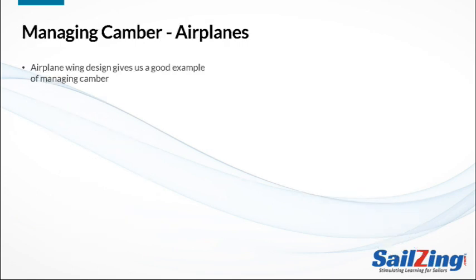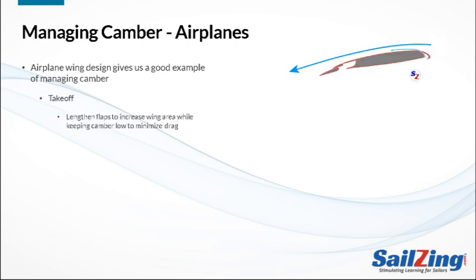Even though there are a lot of differences between airplanes and sailboats, it's helpful to realize that airplanes couldn't fly very efficiently without being able to manage the camber in their wings. Takeoff, cruising, and landing each need different wing shapes. For takeoff, we want the plane to reach a high speed, enough to produce a lot of lift. The pilots maximize lift by extending the wing's flaps, both ahead and behind the wing, to give it more surface area. The extra surface area produces some more drag, but the airplane's engines easily overcome this drag. Note that sailboats don't have engines to counteract drag.